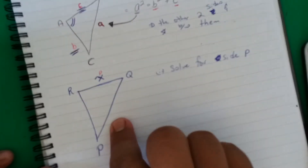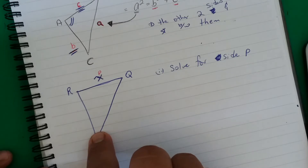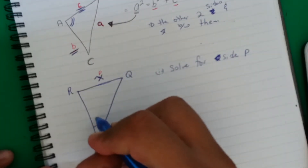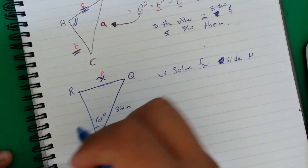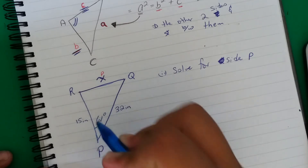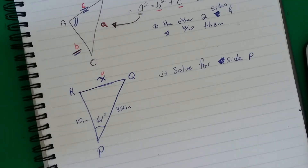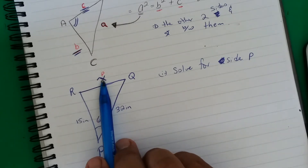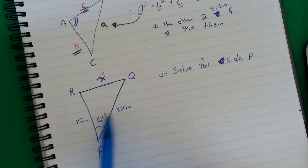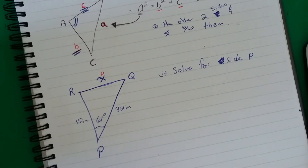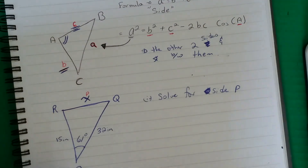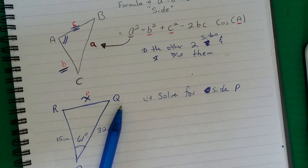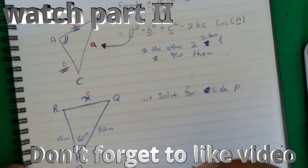To use the cosine rule, I must be given a length for the two other sides and the included angle. Let's say the angle is 61 degrees, one side is 32 inches, and the other side is 15 inches. So we have angle C given — the one corresponding to the side being solved — and the other two sides are given. Now remember, the formula is a squared equals b squared plus c squared minus 2bc cosine of angle A, but we want to rewrite it for triangle PQR since it is no longer triangle ABC.